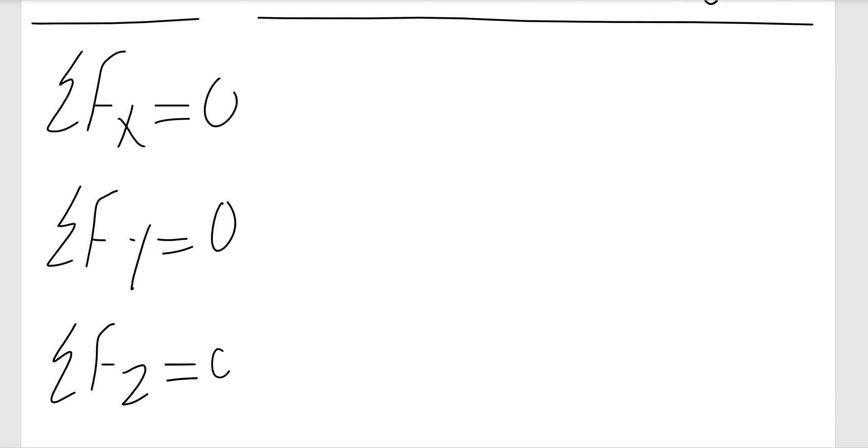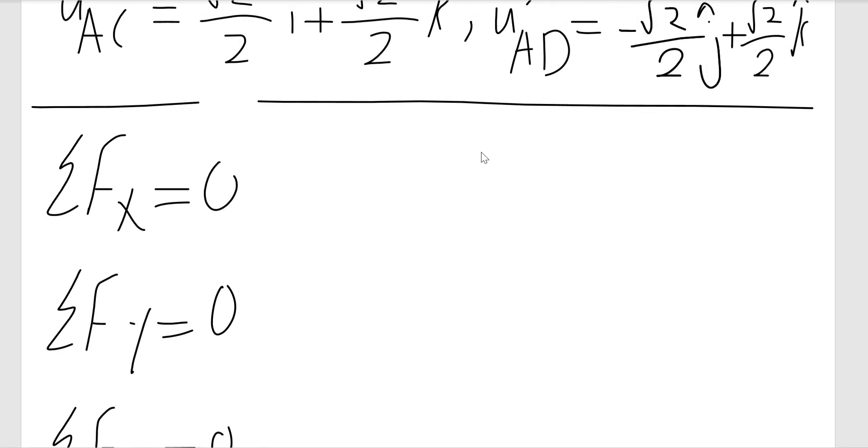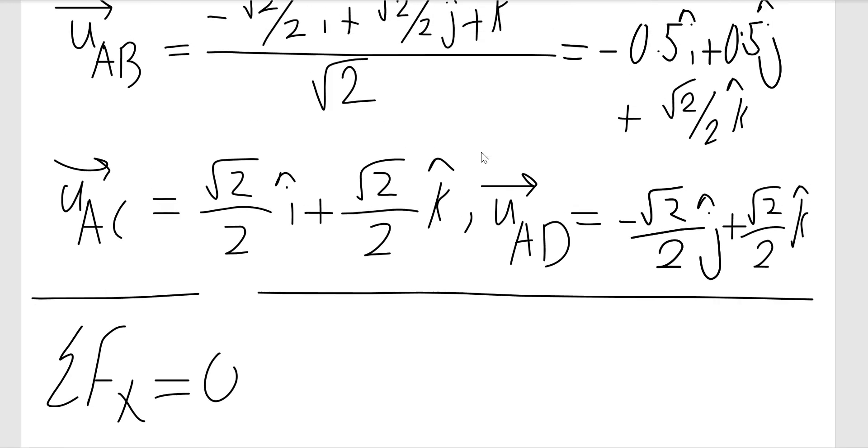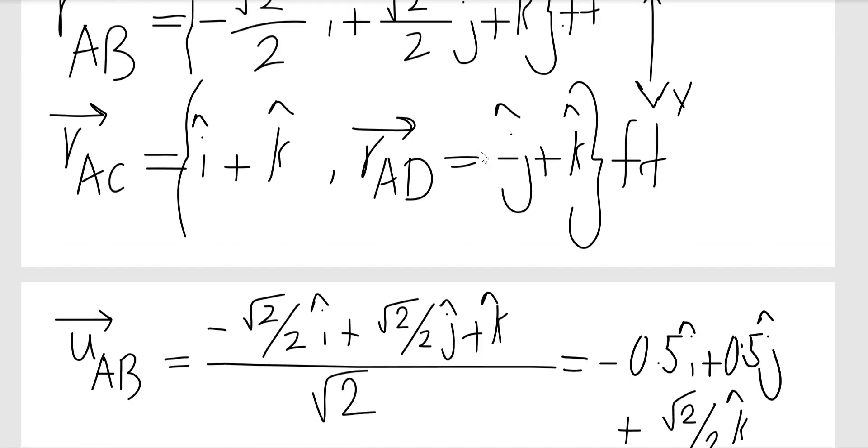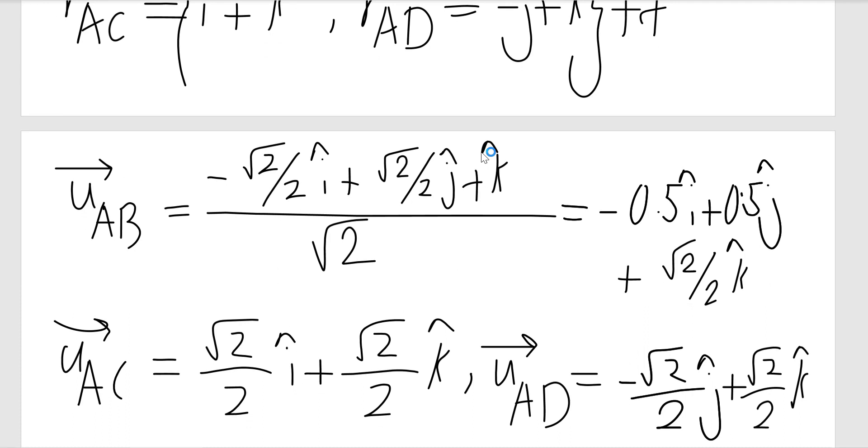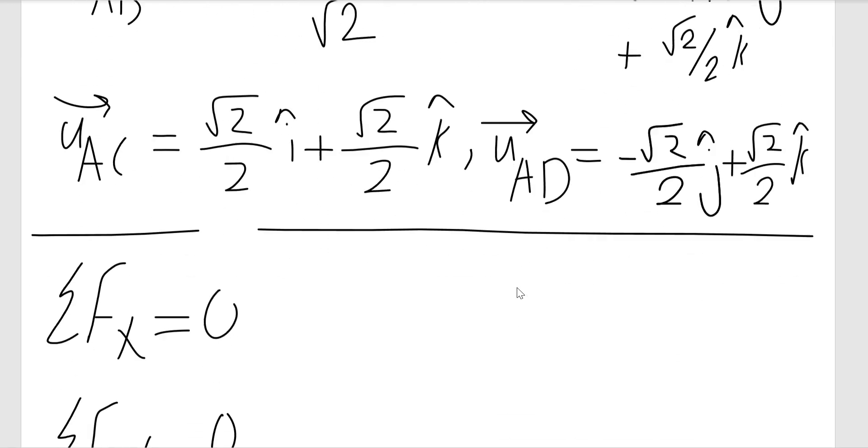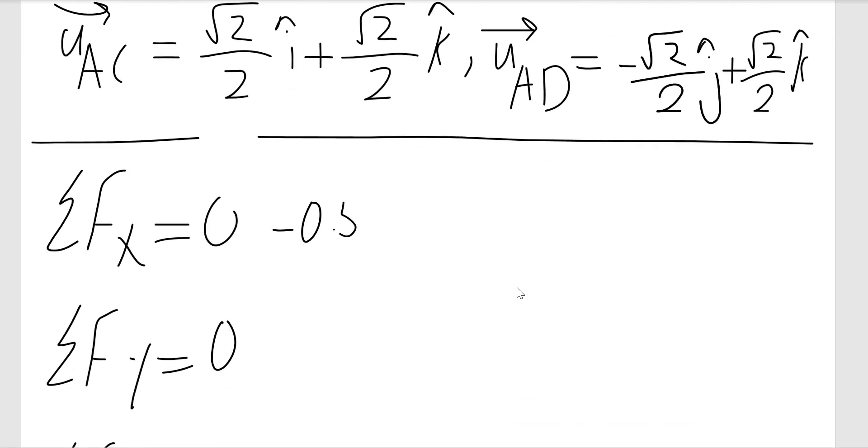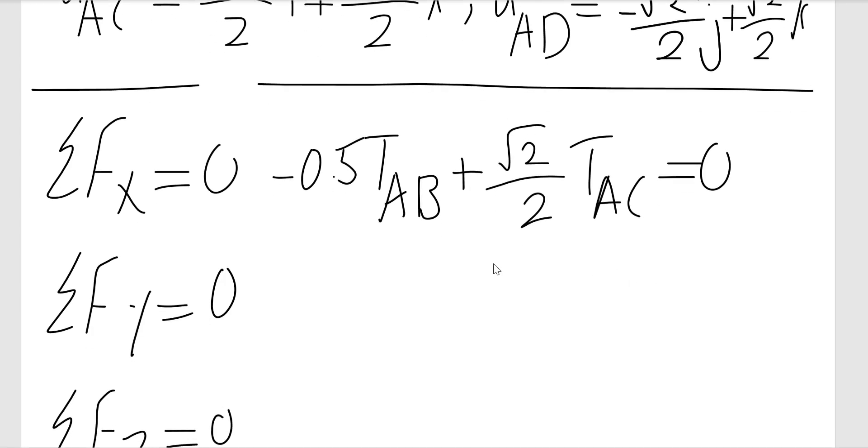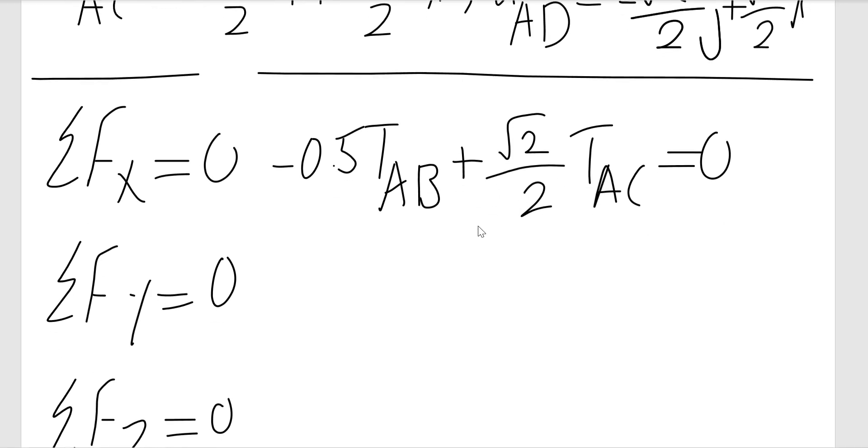The first component would be: TAB times negative 0.5, so -0.5 TAB plus (√2/2) TAC equals 0. From here you can find a relation between TAB and TAC. For the Y equation: 0.5 TAB plus (√2/2) TAC equals 0.